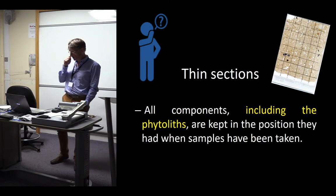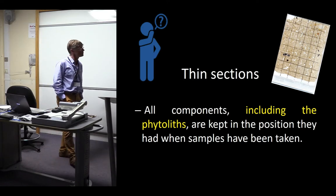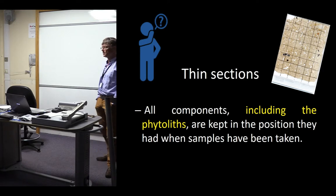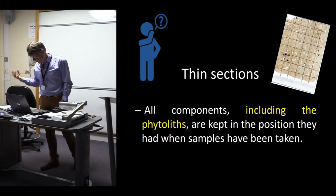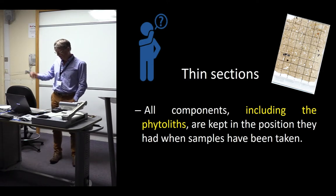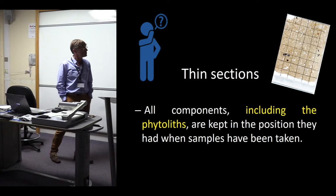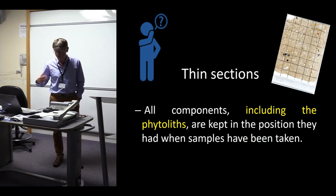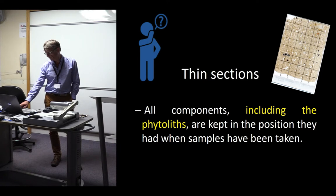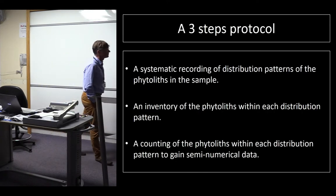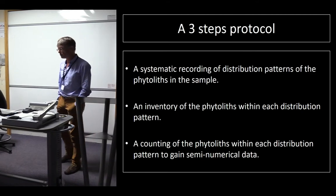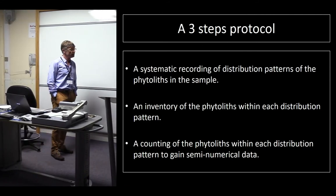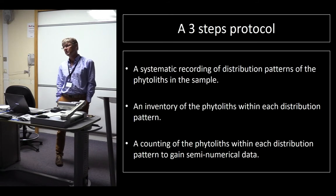The data we will consider comes from 19 dark earth units from the medieval and post-medieval period, from six archaeological sites all located within the historical center of Brussels. The data was gained from scanning of five-by-five millimeter squares selected on the thin sections after the macromorphological study, focusing on the phytolith content of the soil matrix along a three-step protocol: a systematic record of each distribution pattern, a phytolith inventory of those patterns, and a counting of the phytoliths composing each distribution pattern.